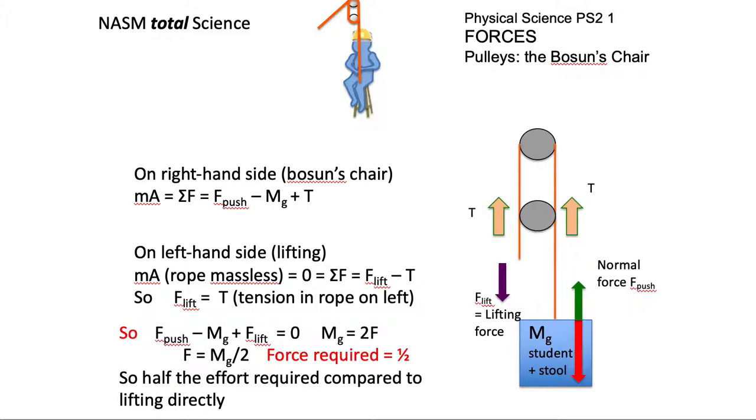Him or herself up, the force required is going to be a half. So the right-hand side which is the mass of the student and the tension on the rope. On the left-hand side, the lifting force equals the tension on the rope.